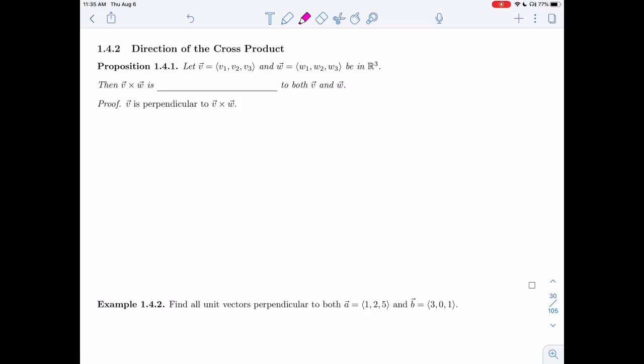In section 1.4.2, we'll be talking about the direction of the cross product. Let me take V and W to be in R3, then V cross W, we just said, is perpendicular to both V and W.